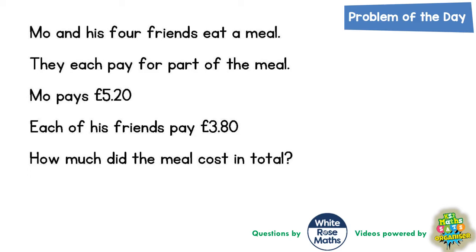Welcome, problem solving fans, to another problem of the day. This one is about Mo and his four friends eating a meal. They are each paying for part of the meal, sharing the cost, but Mo is paying £5.20 and each of his friends are paying £3.80 — so they're not actually sharing the cost equally. Mo is paying the most. How much did the meal cost in total?